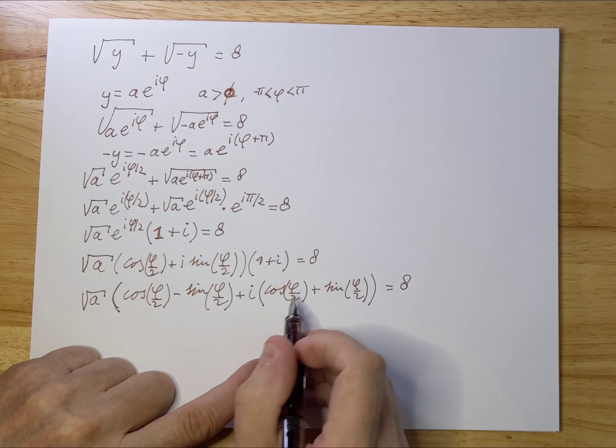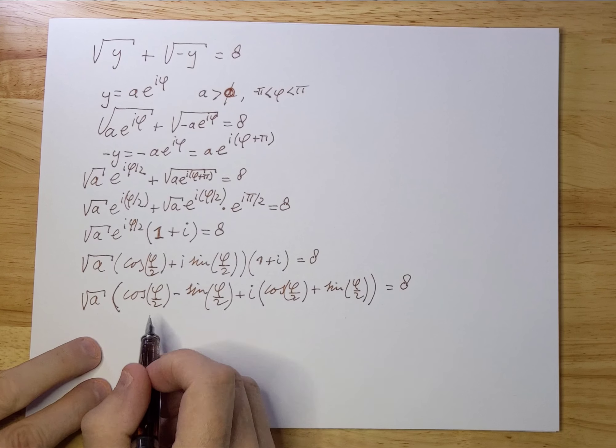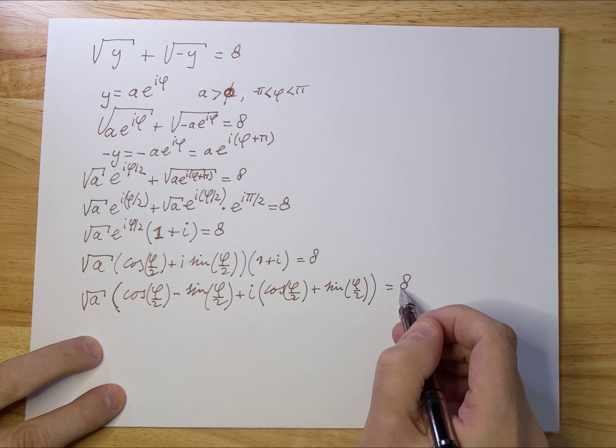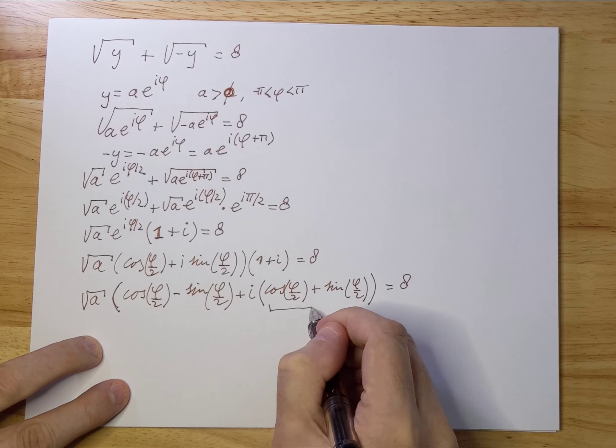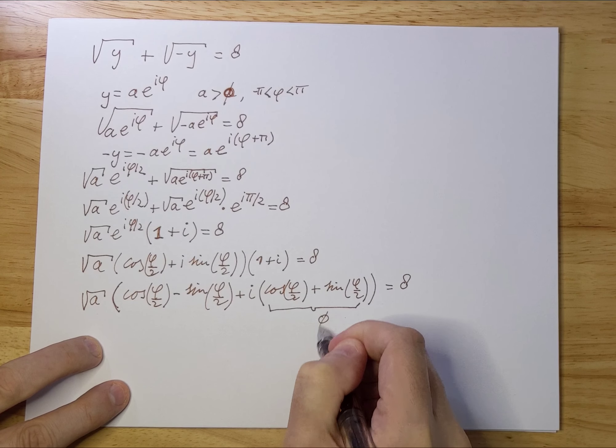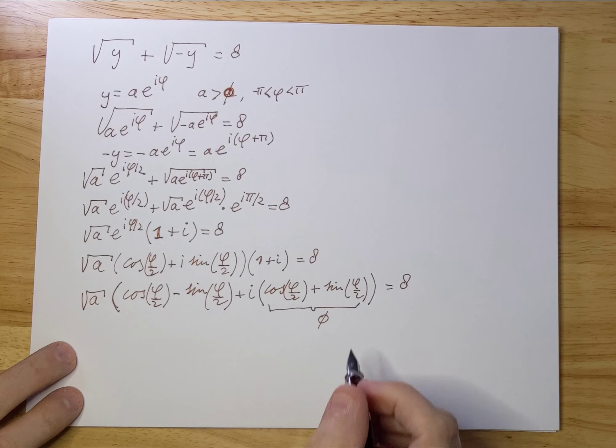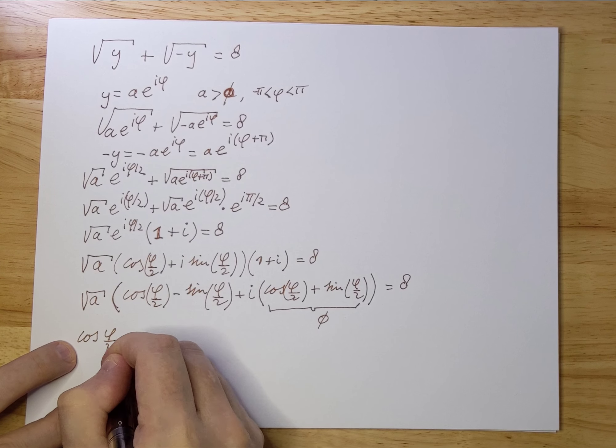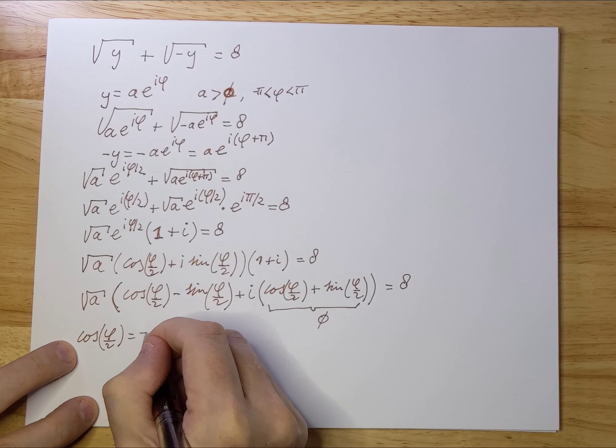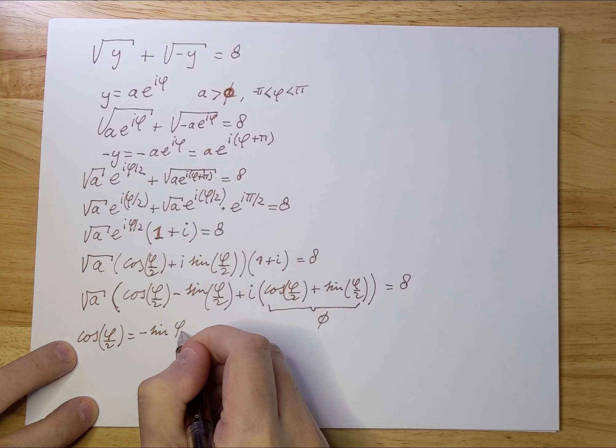So now we've separated this into a real number and a complex number. This number is real and not complex, so the imaginary part must be 0. Therefore, cos(φ/2) = -sin(φ/2).